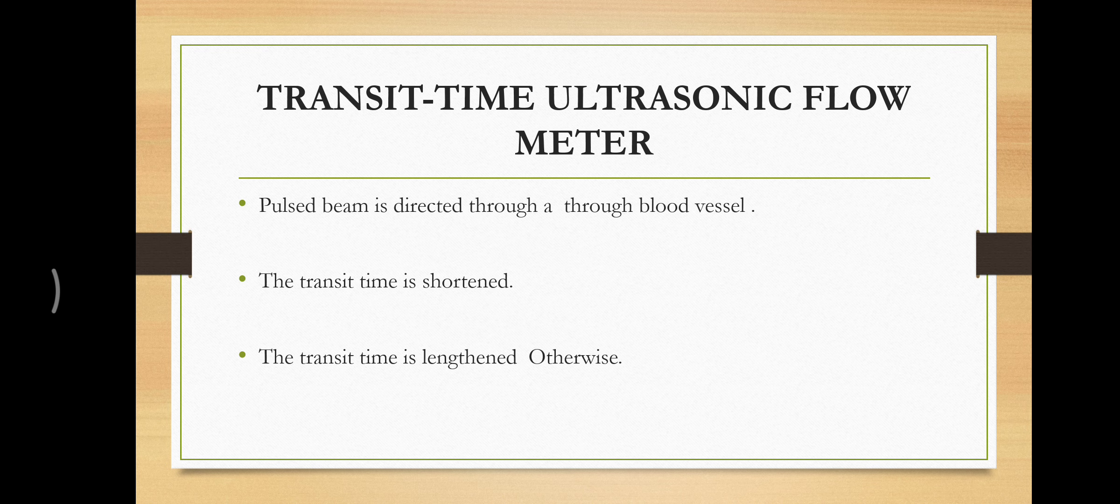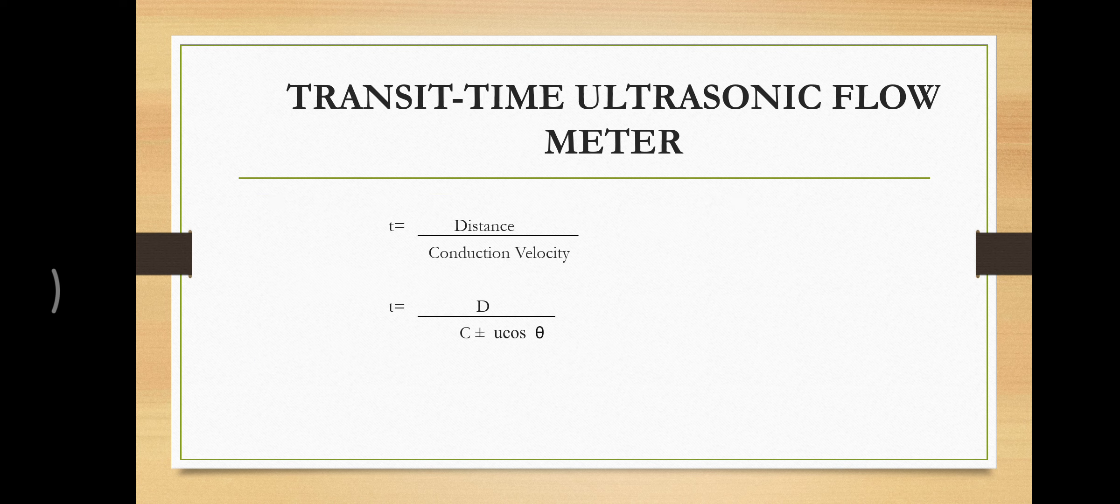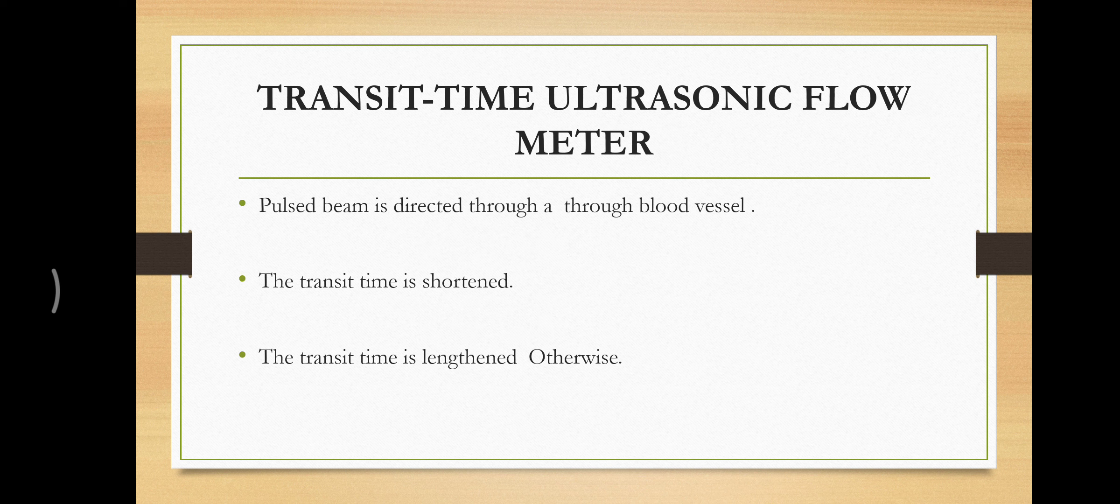Transit time ultrasonic flow meter. The two transducers are placed in blood vessels and the transmit times are calculated by using this formula. The transit time is shortened when the blood flows in the same direction as the transmitted energy, but the transmit time is lengthened when the blood flows in the opposite direction as the transmitted energy.